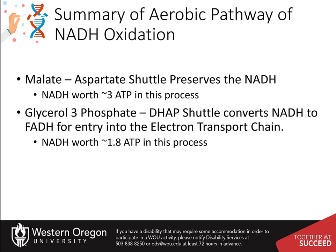In summary, if the malate-aspartate shuttle is used, the energy of NADH is conserved in the process and can be used to produce approximately 2.5 to 3 ATP molecules. If the glycerol-3-phosphate DHAP shuttle is used, NADH is converted to FADH2 to enter into the electron transport chain and will only be worth approximately 1.5 ATP.